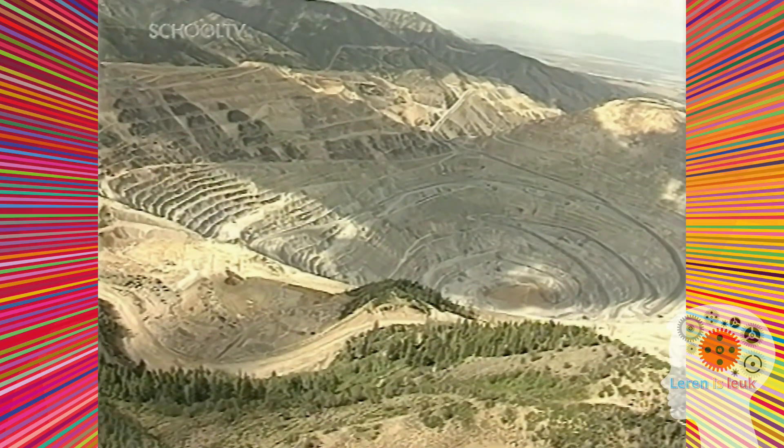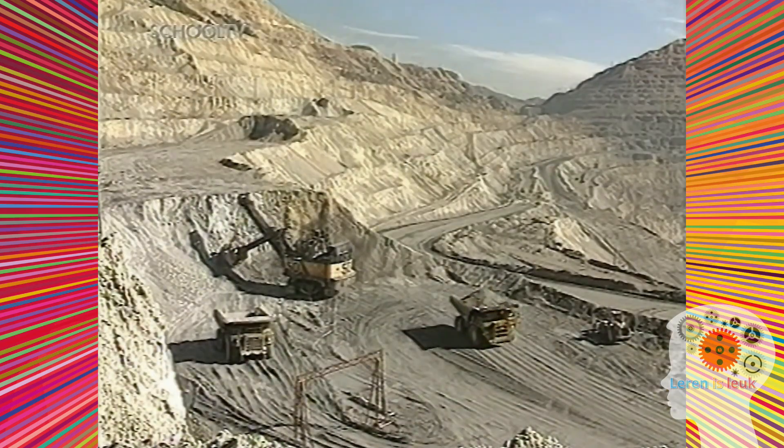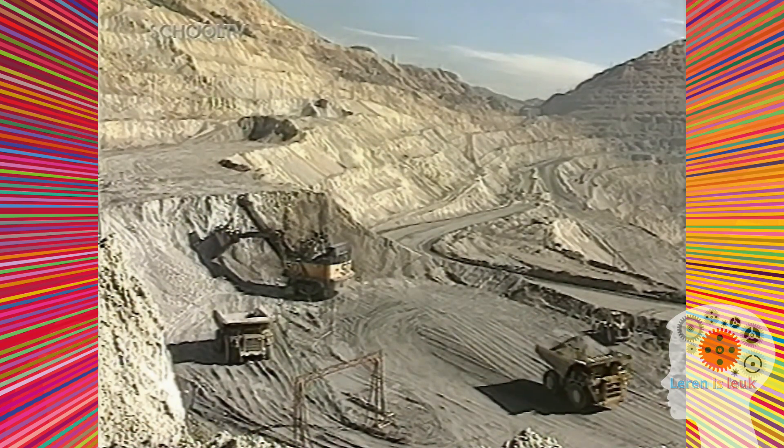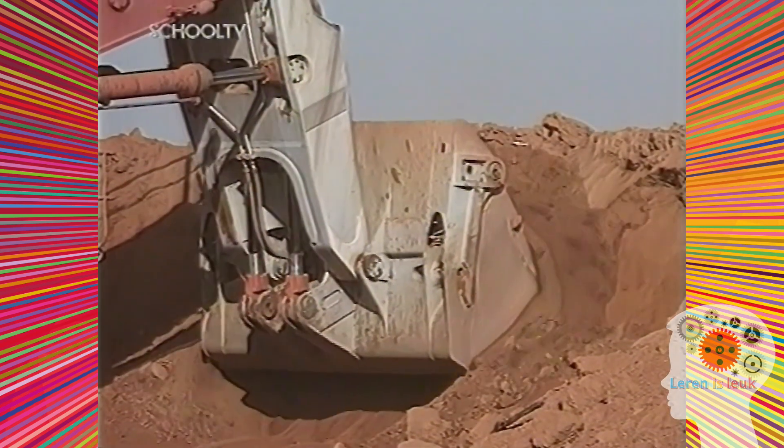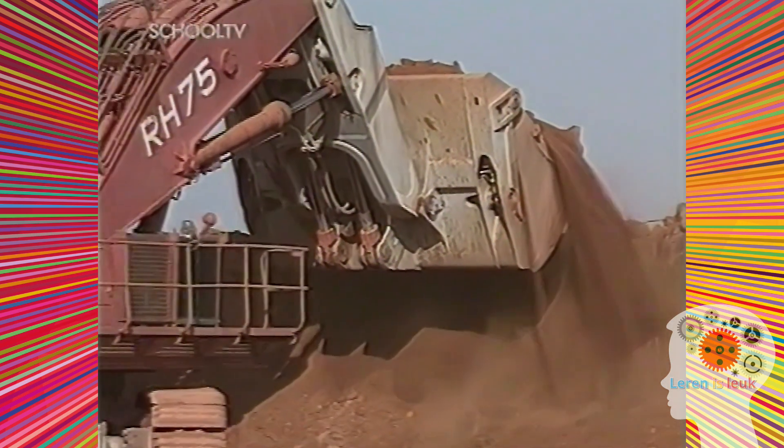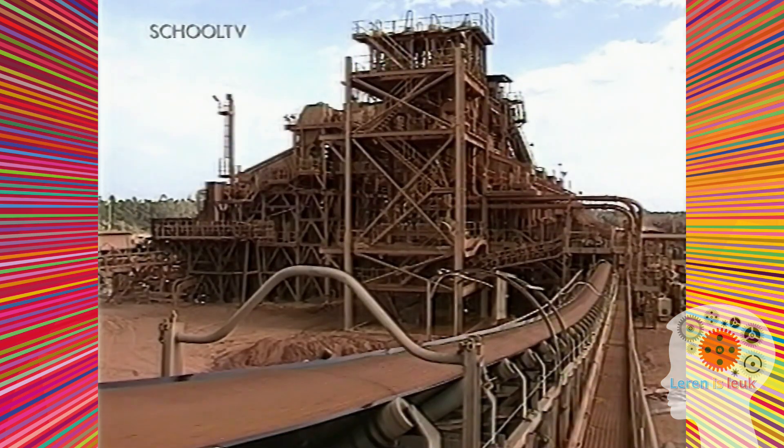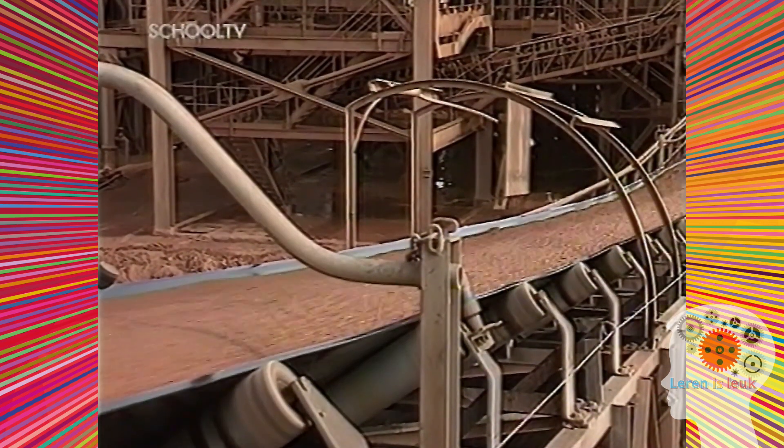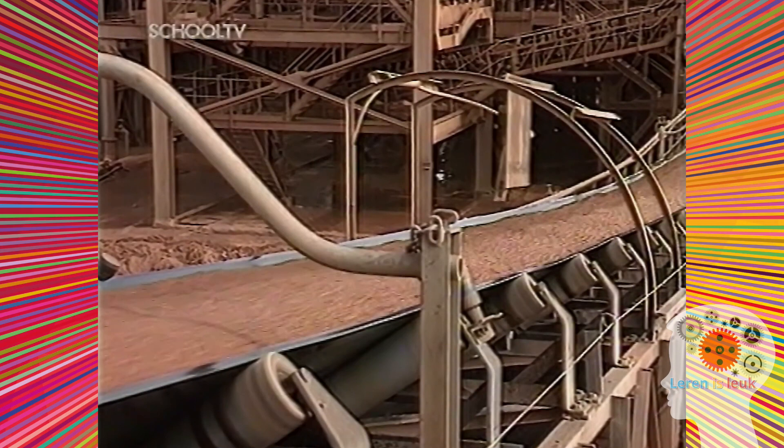De aardkorst bevat heel veel verbindingen. Die verbindingen zijn voor ons niet zo waardevol als de elementen waaruit ze zijn opgebouwd. Dit gesteente bevat aluminiumoxide. Als je aluminiumoxide ontleed, krijg je aluminium, een van de meest waardevolle metalen.